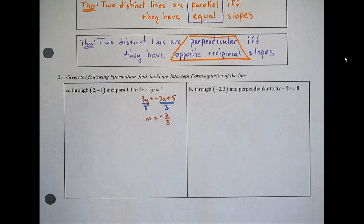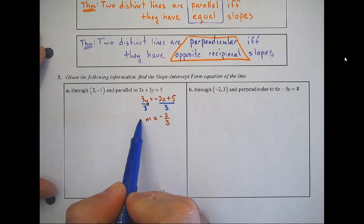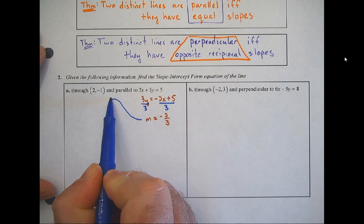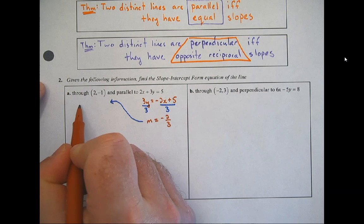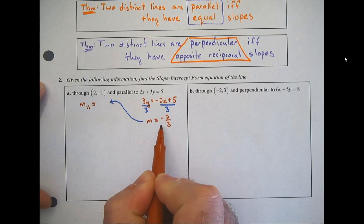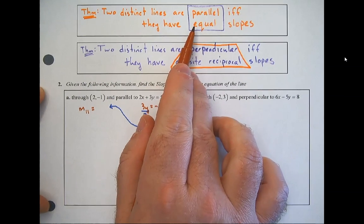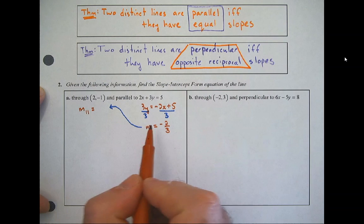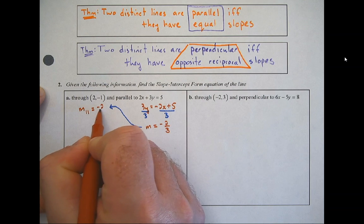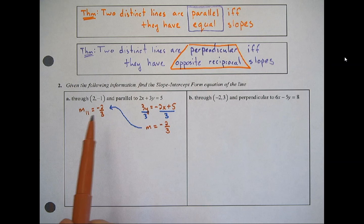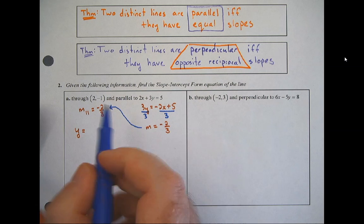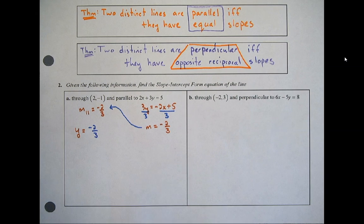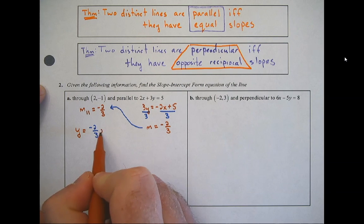I like to draw a little line to remind myself which slope I'm looking for. I'm looking for the parallel slope. Parallel lines have equal slopes, so this slope is negative 2 thirds as well. Now that we have the slope and a point, we can start to plug into y equals mx plus b. Y equals, do we know m? Yep, negative 2 thirds x plus b.